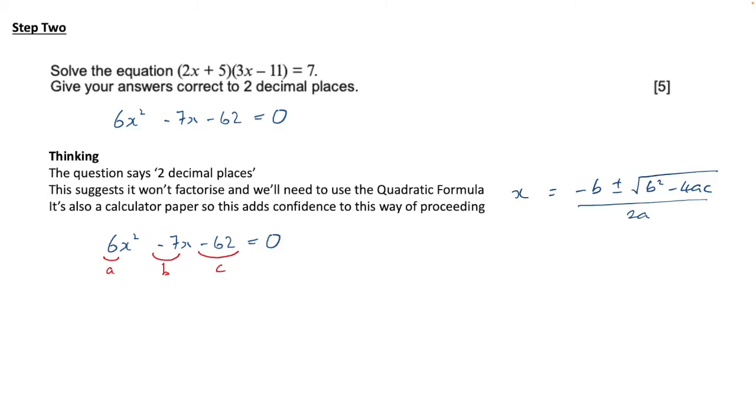Now a good idea is to enter all that into the quadratic formula with brackets just so that you get all those negatives correct. You may then want to do an interim step before you enter it into the calculator of dealing with the negatives. So minus minus 7 is of course plus 7.